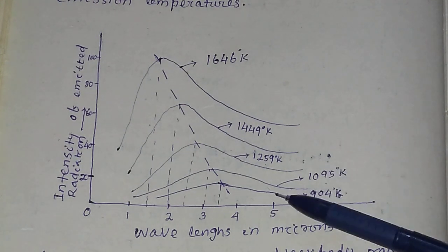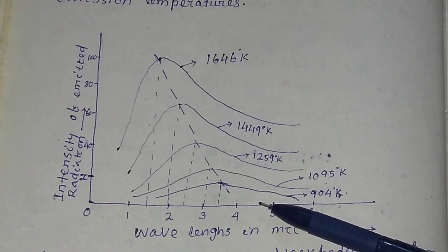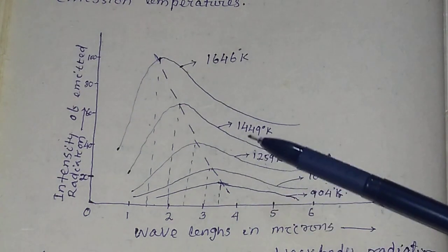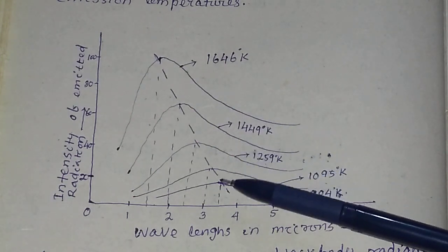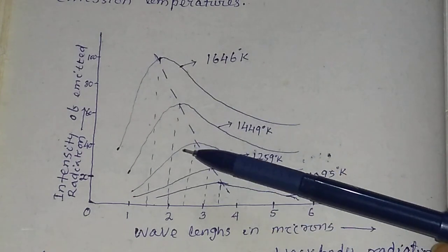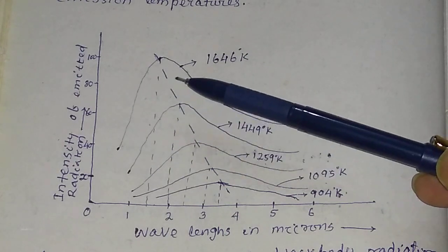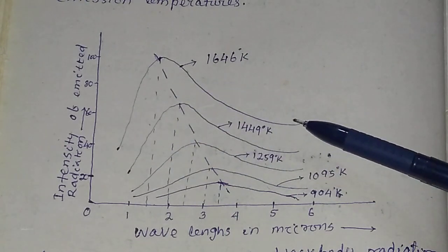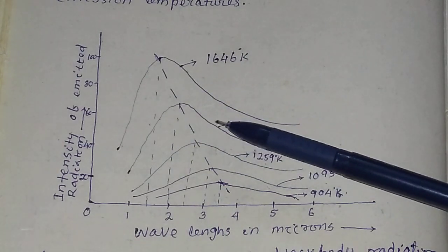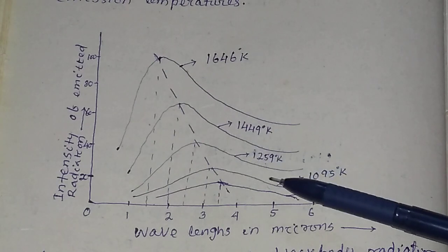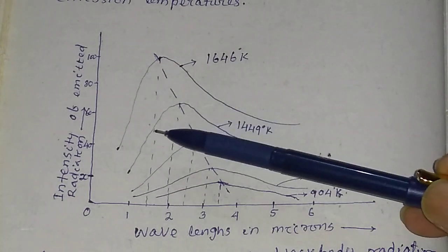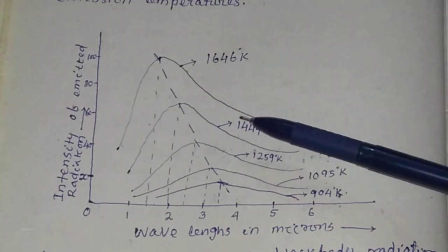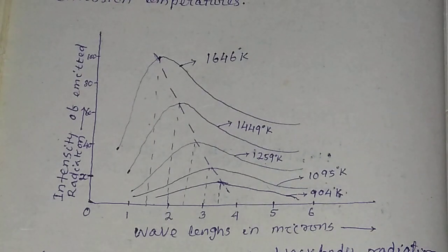This is the experimental curve of black body radiation. At a particular temperature, if you plot the graph between wavelength and intensity, this will be the nature of the black body spectrum. These are the various spectra at various temperatures, and the whole spectrum of black body radiation could not be explained by classical theory.